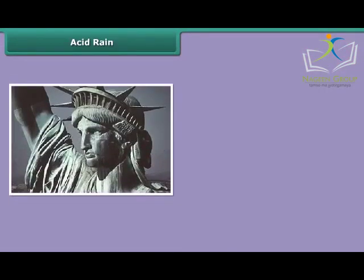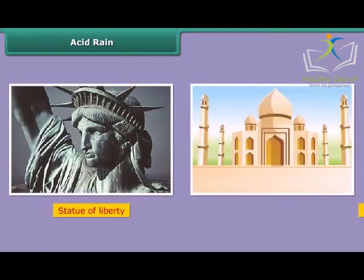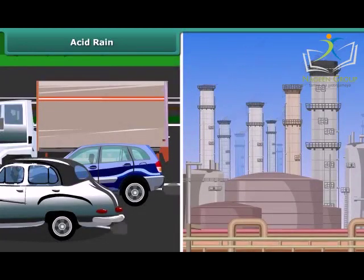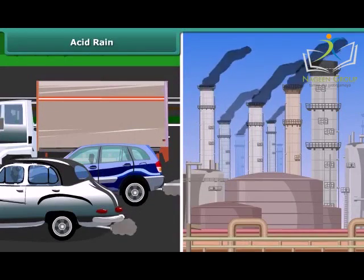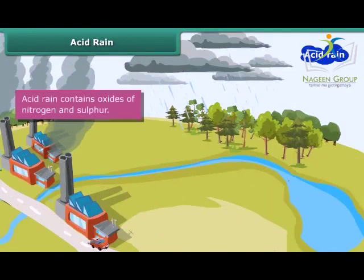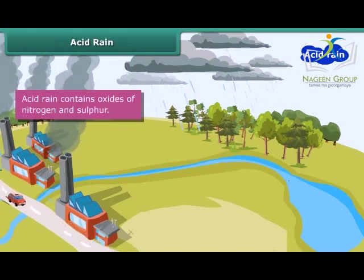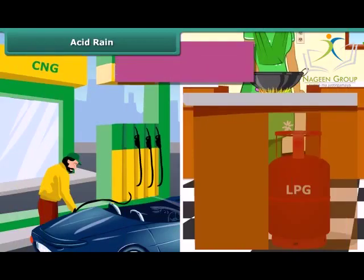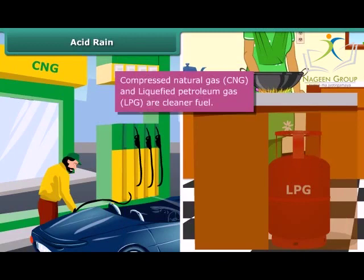These are the images of the Statue of Liberty in New York and the Taj Mahal in Agra. They are badly damaged due to acid rain. Industries and vehicles release toxic gases like sulfur dioxide and nitric oxide into the atmosphere. These gases react with water vapors present in the atmosphere to form sulfuric acid and nitric acid, which fall as acid rain. Use of clean fuels like compressed natural gas, CNG, and liquefied petroleum gas, LPG, can reduce the acidity of rain.